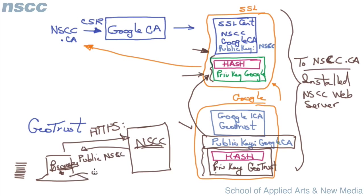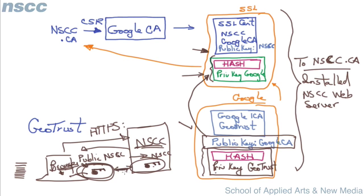The browser generates a symmetric key and encrypts that key with the public key it got from NSCC, then sends that key over to the web server. The NSCC web server has a private key it keeps secure, so it decrypts the message and gets the same symmetric encryption key. Both ends now use this symmetric encryption key to exchange information for the rest of their session — whether they're doing a credit card sale or whatever. This is how a chain of trust is established.